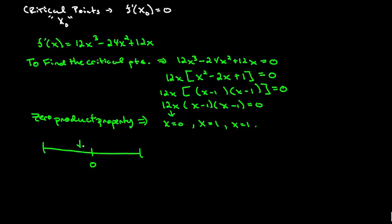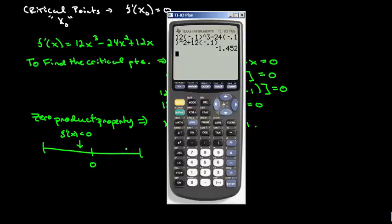It tells me just a little bit to the left that the derivative f prime of x is negative. Now let's go ahead and check just a little bit to the other side. So let's try positive 0.1. And that comes up to be positive.